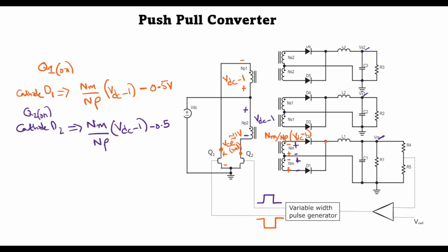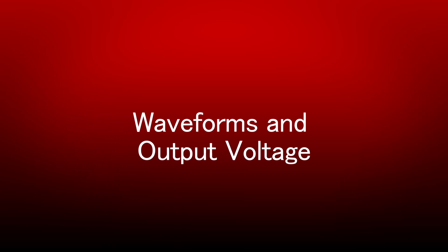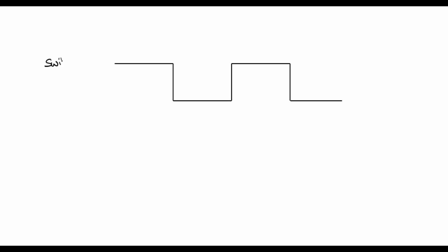What follows this point is an LC filter, just like we have in a buck regulator. So whatever voltage appears at the cathodes of D1 and D2 gets filtered out and then we get the filtered output VM. Let's now look at the waveforms in more detail to find out the type of voltage which appears at the cathode of D1 and D2. Let's define the switching frequency — one period and two periods.